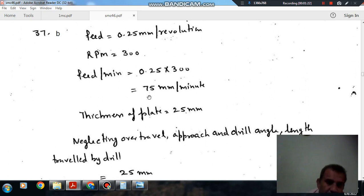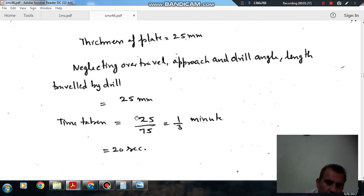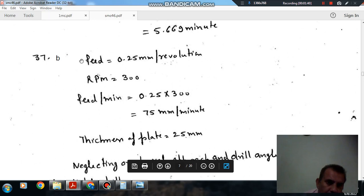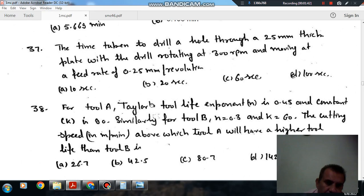So that is 25 mm and feed per revolution is given as 0.25 mm per revolution. So if we multiply it by rpm then it will be 75 mm per minute. So now the speed is 75 mm per minute and the distance the drill has to travel is 25, so it will be equal to 1/3 minute or 20 seconds. So answer is option b.